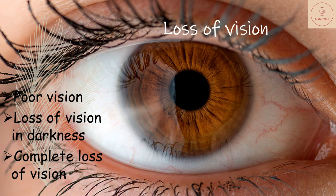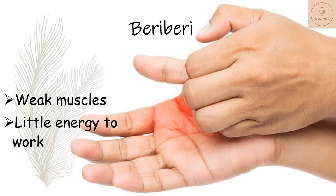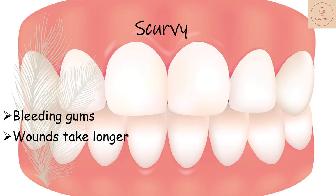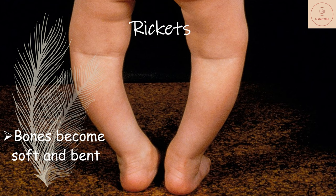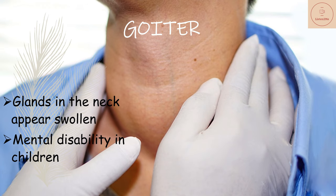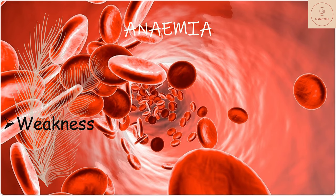Let us see some diseases caused by deficiency of vitamins or minerals. Deficiency of vitamin A causes loss of vision; symptoms include poor vision, loss of vision in darkness (night blindness), and sometimes even complete loss of vision. Vitamin B1 deficiency leads to beriberi, with symptoms of weak muscles and very little energy to work. Deficiency of vitamin C causes scurvy, with symptoms of bleeding gums and wounds taking longer to heal. Vitamin D deficiency causes rickets, where bones become soft and bent. Deficiency of iodine leads to goiter, where glands in the neck appear swollen and causes mental disability in children. Deficiency of iron causes anemia, which results in weakness.